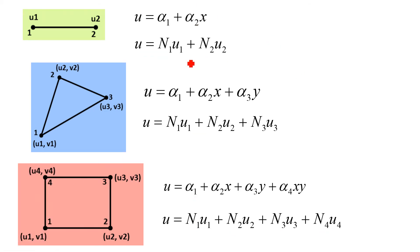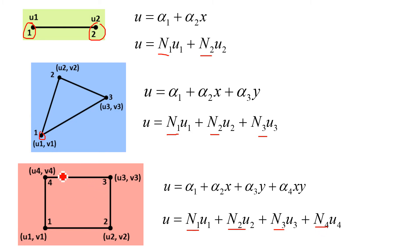Looking at these three examples, one important observation is that in the bar element, the number of shape functions is 2 (N₁, N₂) because the number of nodes is 2. In the CST element, the number of shape functions is 3 because the number of nodes is 3. Similarly, in the rectangular element, the number of shape functions is 4 because the number of nodes are 4. So one important property of shape functions is that the number of shape functions equals the number of nodes — except for bending elements.